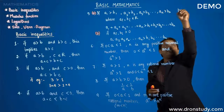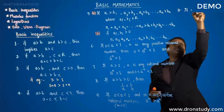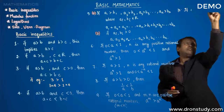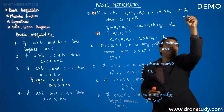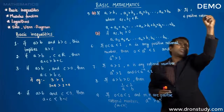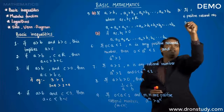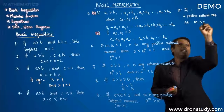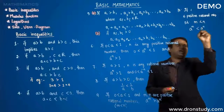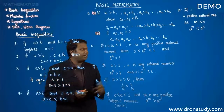Now what happens if a is greater than 1? If a is greater than 1 and m, n are positive rational numbers with m less than n, then a to the power m is less than a to the power n — the inequality follows the same direction as the exponents. These are some of the very basic inequalities related to numbers.